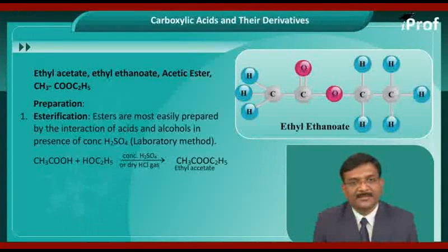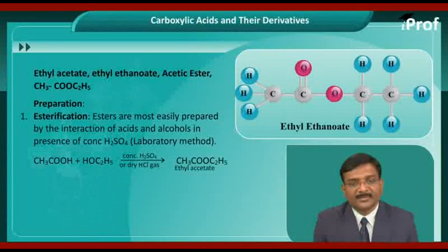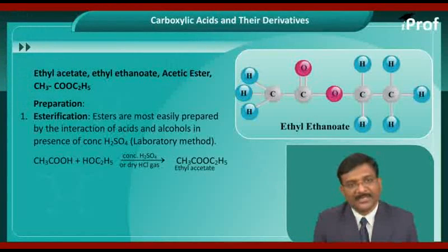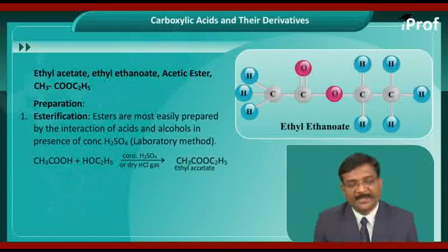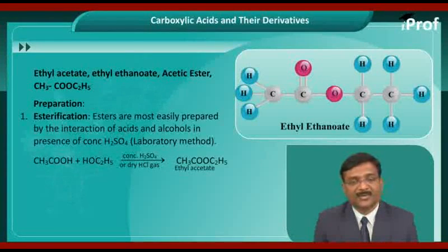Ethyl acetate is prepared by the esterification process. In esterification, esters are most easily prepared by the interaction of carboxylic acids and alcohol in the presence of concentrated sulphuric acid. This is also a lab method to prepare esters. The reaction is CS3COOH plus ethyl alcohol C2H5OH, in presence of concentrated sulphuric acid, gives ethyl acetate CS3COOC2H5.